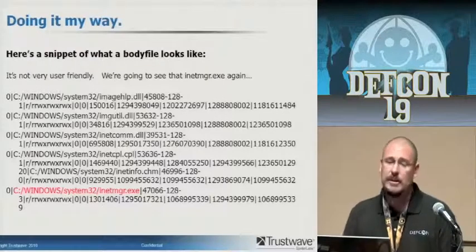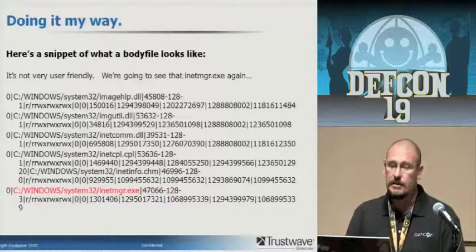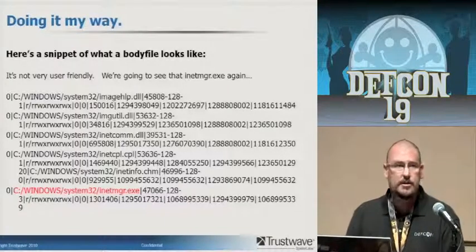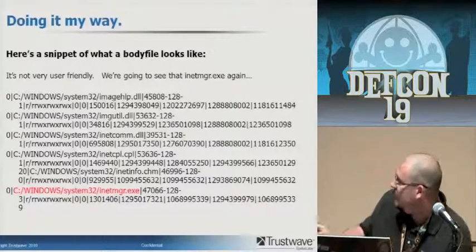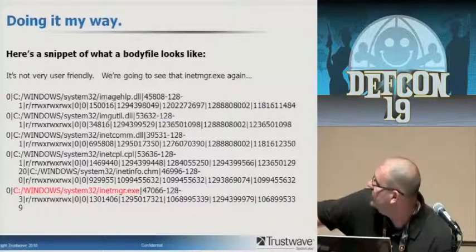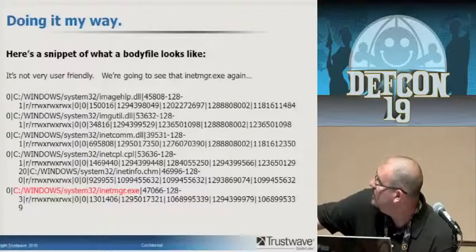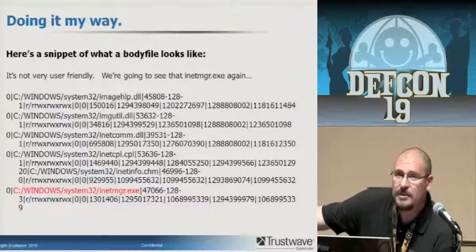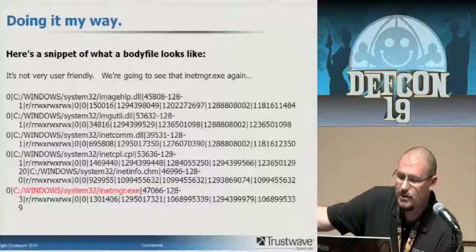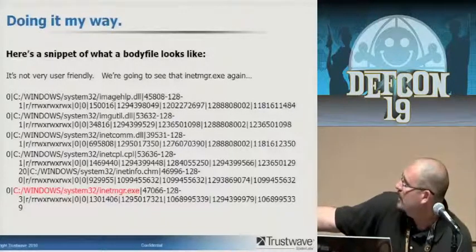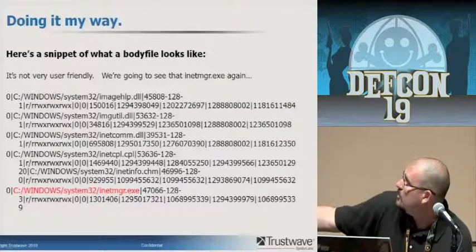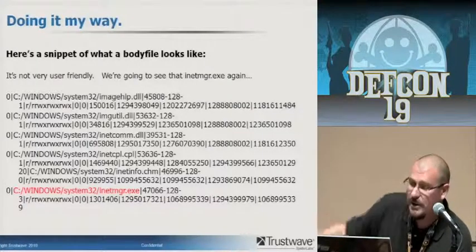Here's what a body file looks like — admittedly ugly, not user friendly at all. You'd actually have to know how many seconds from 1969 or 1970 these numbers designate for each timestamp. Obviously that's not something you want to look at and try to use. Something interesting to note here: I have highlighted in red an inet manager executable — we're going to see that again in just a second.